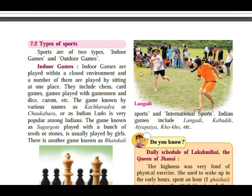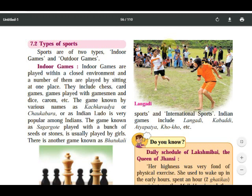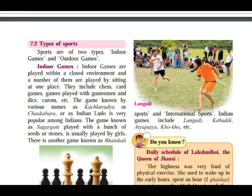The next point is types of sports. Sports are of two types: indoor games and outdoor games. Indoor games are played within a closed environment, and a number of them are played sitting at one place. Indoor games include chess, card games, games played with gamesmen, dice, carrom, etc.